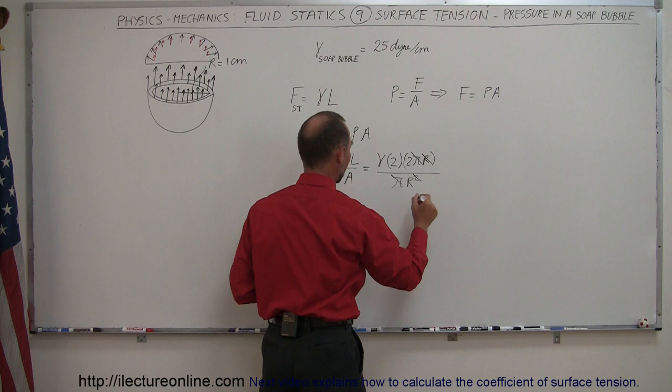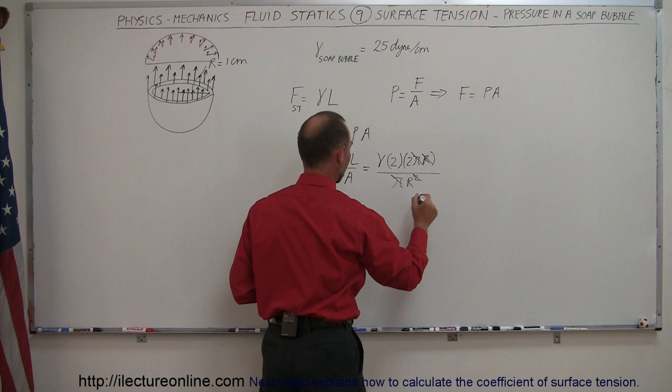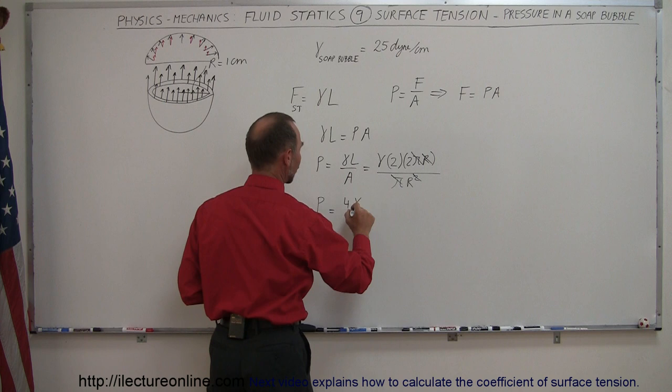Okay, when we simplify this a little bit, we have a π and a π, we have an r, and this r cancels out. So finally, the pressure inside the soap bubble is equal to 4 times the coefficient of surface tension divided by the radius,